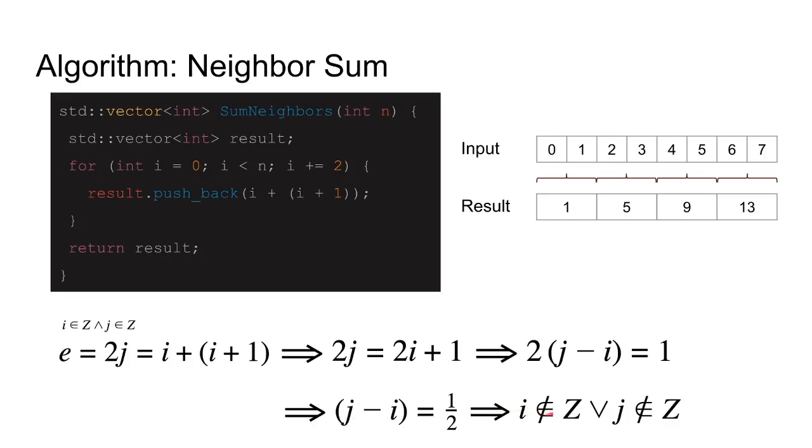Therefore it has to be at least one of them is not inside Z. Now look at this and see where we started from. We started from saying both i and j are in Z, but the exact opposite of this would be at least one of them is not in Z. And this, ladies and gentlemen, is called a contradiction. Because we got a contradiction, e cannot be an even number. So every element that we choose from result has to be an odd number.